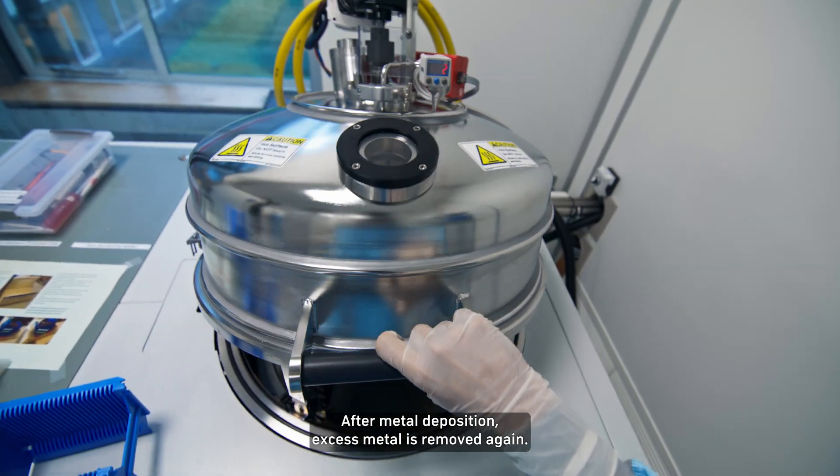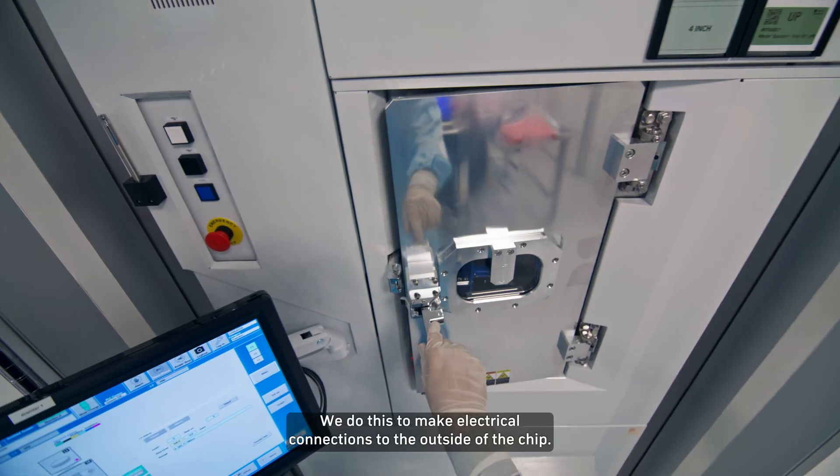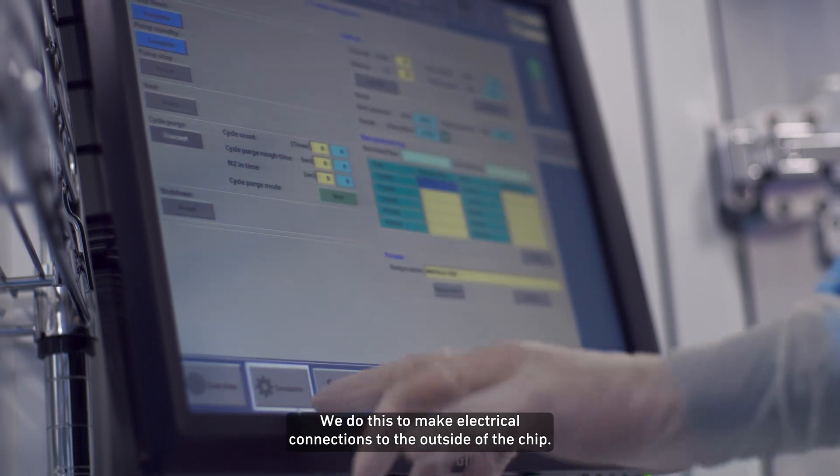After metal deposition, excess metal is removed again. We do this to make electrical connections to the outside of the chip.